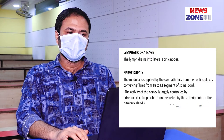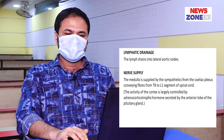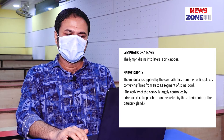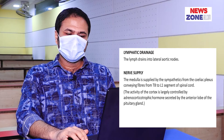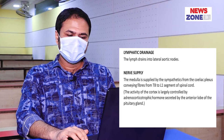Lymphatic drainage drains into the lateral aortic lymph nodes. Nerve supply of the suprarenal gland. The medulla is supplied by sympathetic nerves from the celiac plexus, conveying fibers from the thoracic 8 to lumbar 1 segments of the spinal cord. These fibers make synaptic connections with the chromaffin cells of the medulla, which act as postganglionic neurons. The activity of the cortex is mostly controlled by adrenocorticotropic hormone, secreted by the anterior pituitary gland.